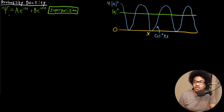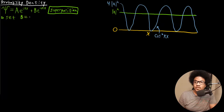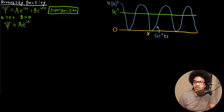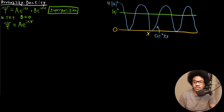What would happen if we take one of these functions away? Let's say we set B equal to zero. If we set the constant B equal to zero, that simplifies our wave function to only the single function A e to the i k x.